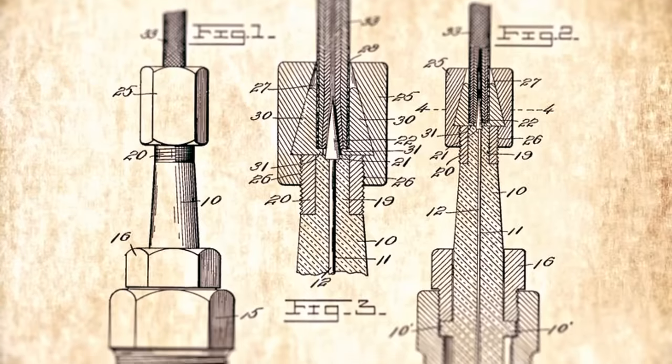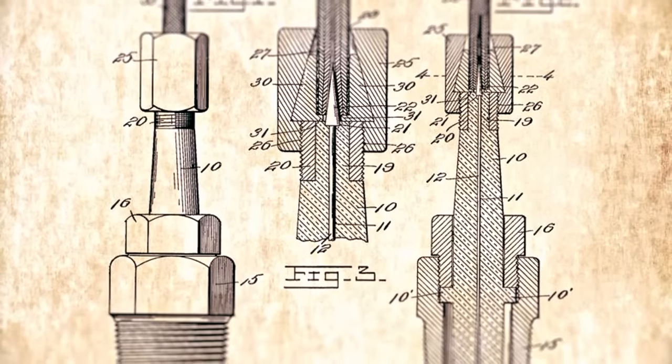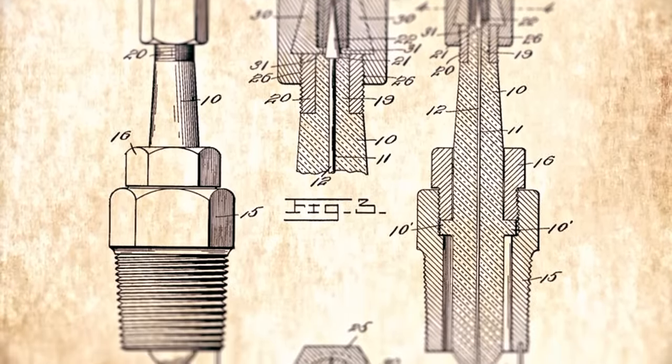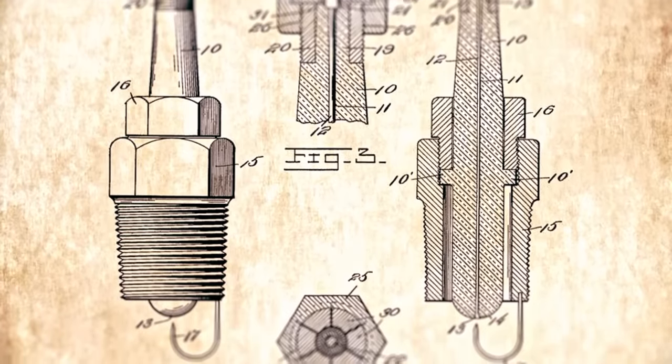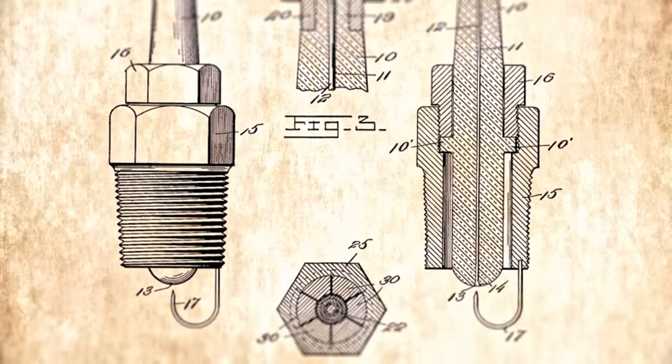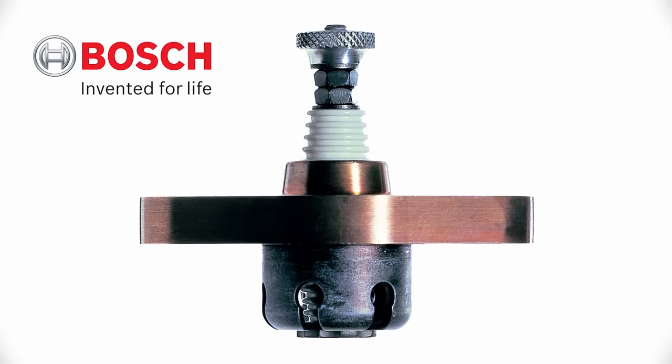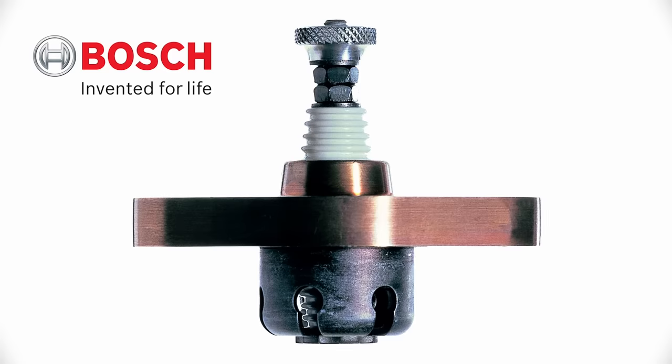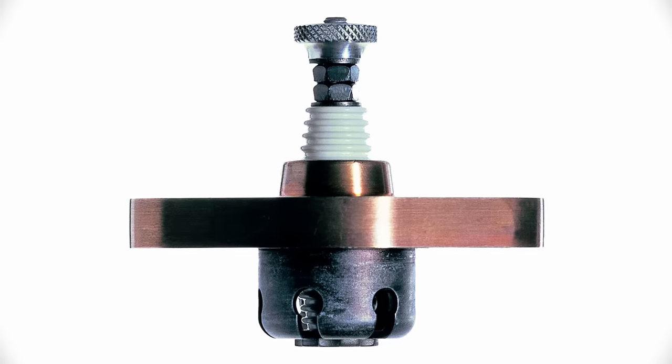By the turn of the century, refinements to the basic design of a spark plug would result in patents being filed by Nikola Tesla, Frederick Richard Sims, and Robert Bosch all around the same year. Robert Bosch would become the first company to develop a commercially viable spark plug designed to be paired with a high-voltage magneto-based ignition system.